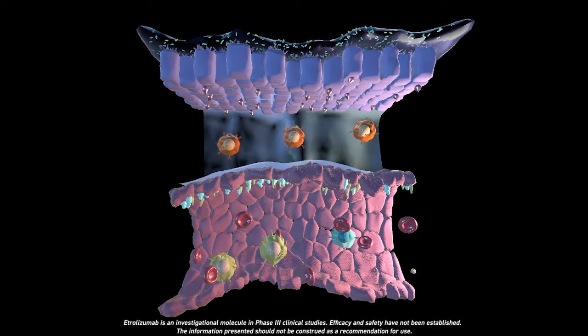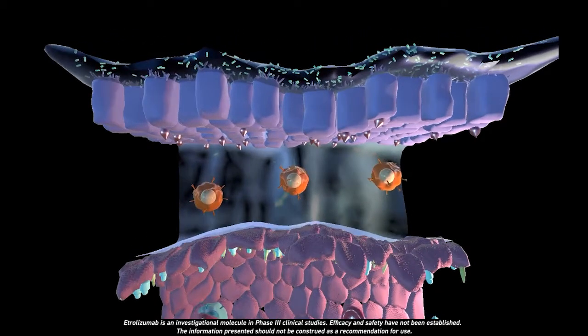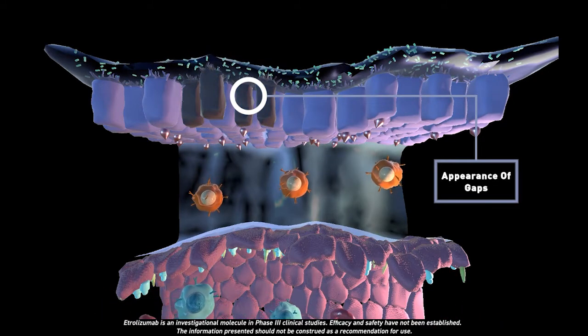In IBD, various factors trigger events that eventually lead to chronic inflammation of the gut. Initially, gaps appear between the tightly tethered gut cells and the mucous layer becomes thinner.